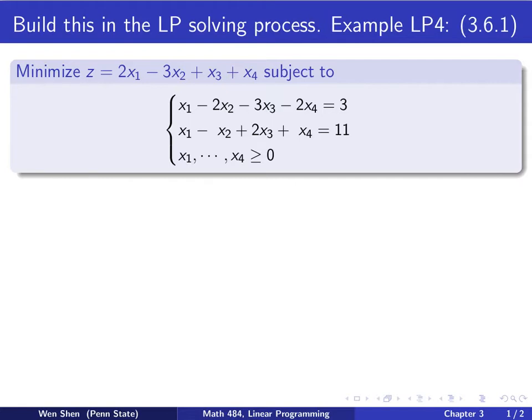We have the following problem. We want to minimize this function z here, subject to two constraints with restricted variables. So this is in standard form, but not in canonical form.